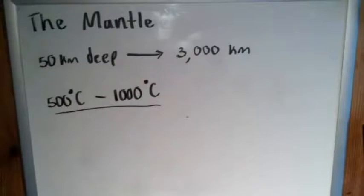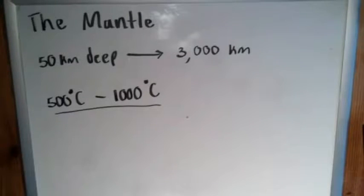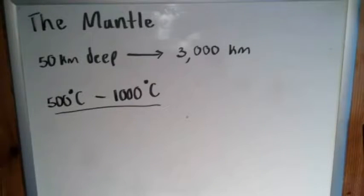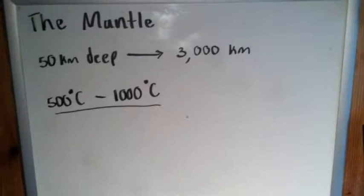Obviously, at the boundary between the mantle and the crust it's going to be cooler than that, and at the boundary between the mantle and the core it's going to be a bit warmer than that. But that's generally the range you'll see — the mantle getting much hotter as we continue downwards towards the core.